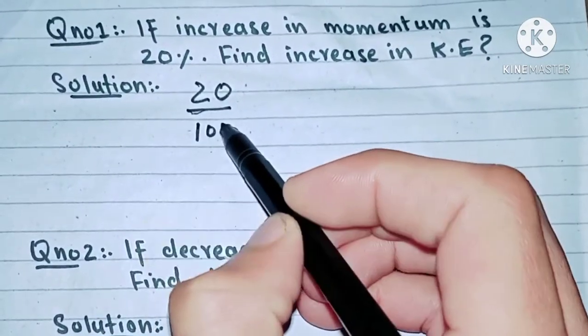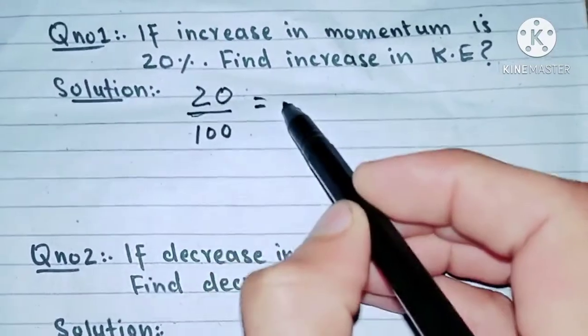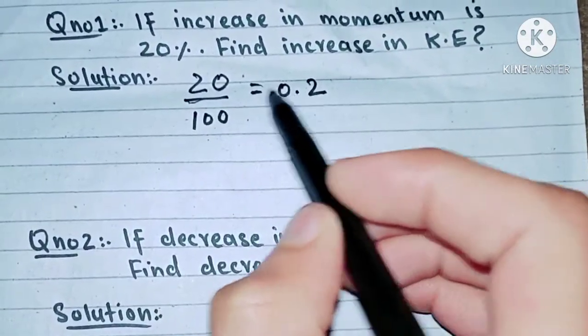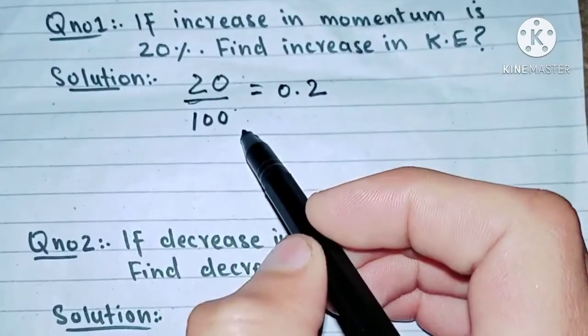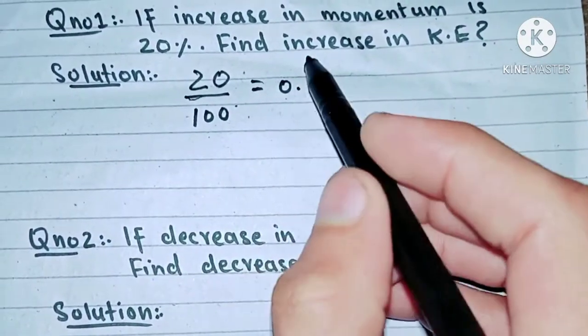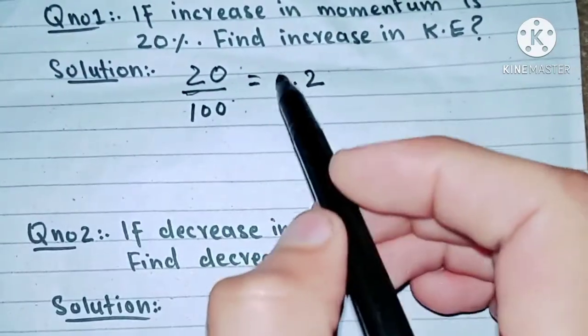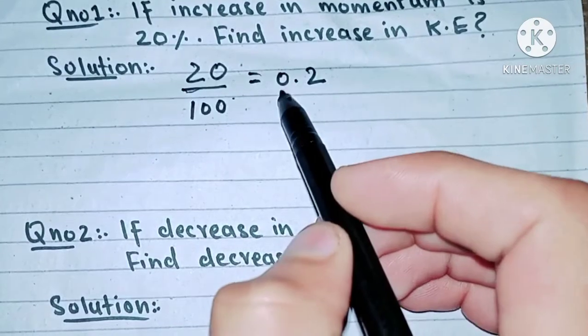Like this, we will get 0.2. This is a numerical value from the percentage. Now the trick is that if increase in momentum is given, remember, if increase in momentum is given, then you will have to add...